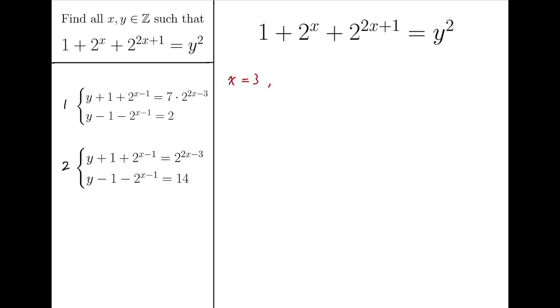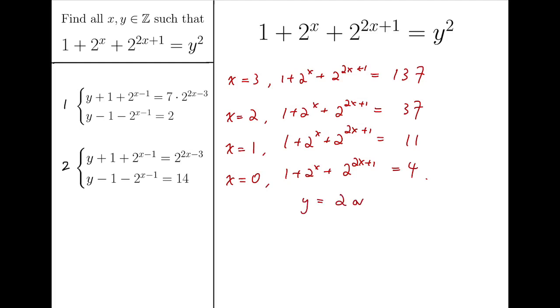So when x is 3, this expression would equal 1 plus 8, which is 9, and then adding by 2 to the 7, which is 128 plus 9, and 137. Clearly not a square. When x is 2, this expression would equal 1 plus 4, which is 5, plus 32, which is 37. Again, clearly not a square. When x is 1, this expression will be 11. Again, not a square. When x is 0, this expression is 4. And in this case, y can be 2 or minus 2.